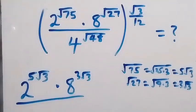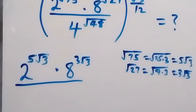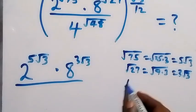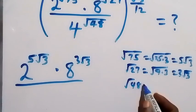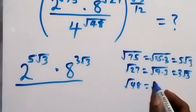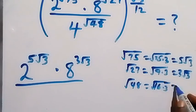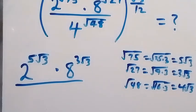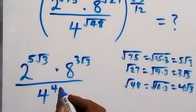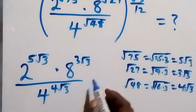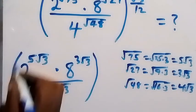Then divided by 4 raised to power root 48. Root 48 can be written as root 16 times 3. Root 16 is 4, so root 48 becomes 4 root 3. So we write 4 raised to power 4 root 3.